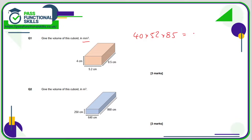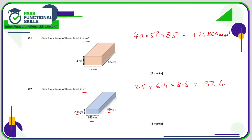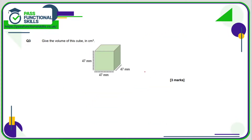That comes to a total of 176,800 cubic millimeters. Same thing here — we want a volume in cubic meters but the dimensions are in centimeters, so let's turn them into meters. That's going to be 2.5 multiplied by 6.4 multiplied by 8.6, and that comes to a total of 137.6 cubic meters.